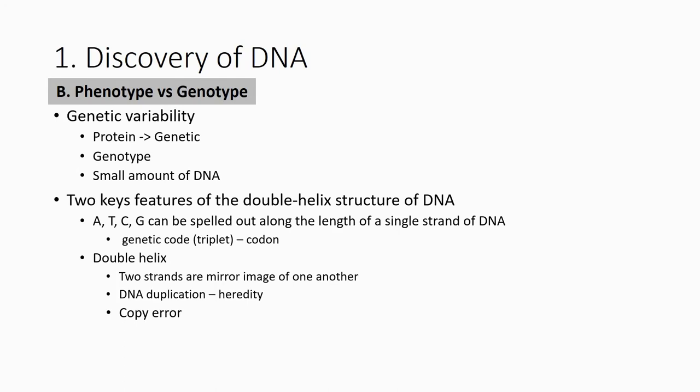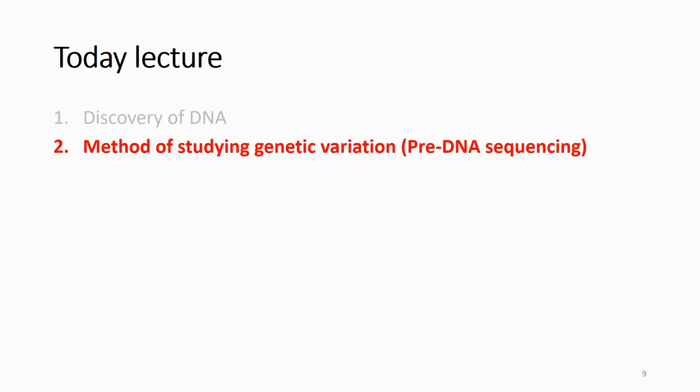Genetic variation is very important. If everything were the same, there would be no genetic variability — all morphology would be identical. For natural selection to happen and for species to survive, there must be genetic diversity. This is the importance of DNA.